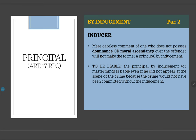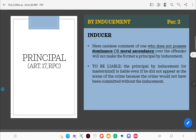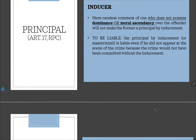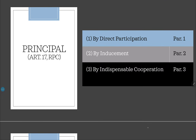Always remember: the principal by inducement — the mastermind — is liable even if he did not appear at the scene of the crime, because the crime would not have been committed without the inducement. This is unlike the principal by direct participation, for whom presence at the scene is essential. For the principal by inducement, it is not necessary to be present at the scene of the crime.